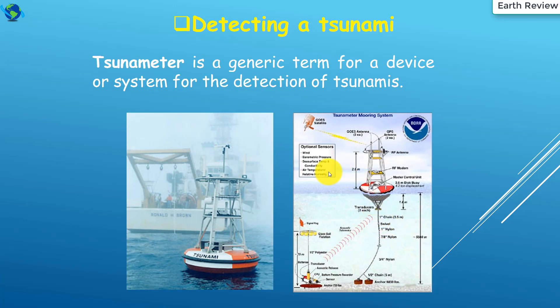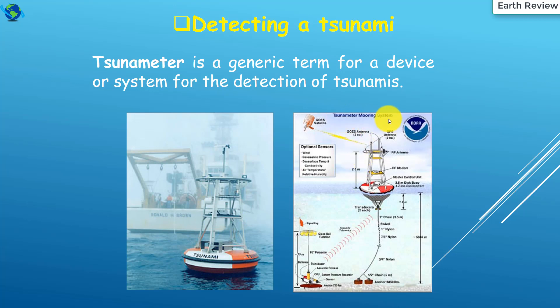How can we detect a tsunami? There is a meter named tsunami meter, which is a generic term for a device or system for the detection of tsunamis. You can see the meter — that is a sonometer. The specific system used to detect tsunamis is the sonometer mooring system. This is the whole illustration of the sonometer mooring system.